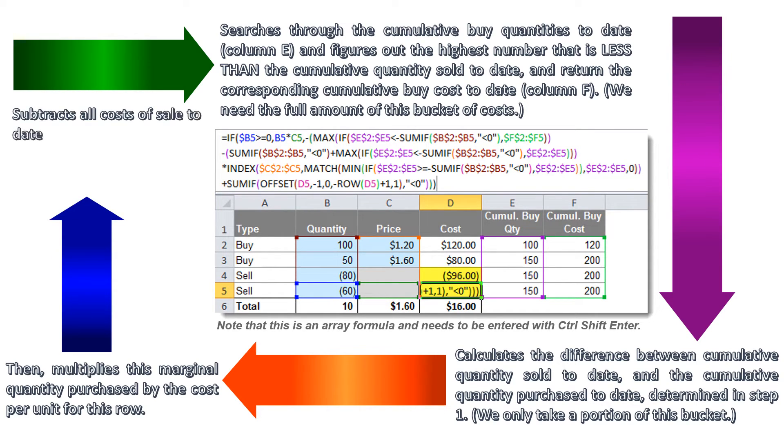Finally, subtracts all costs of sale to date, thereby leaving you with the purchase cost of the row in question.